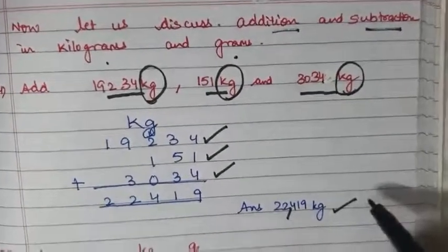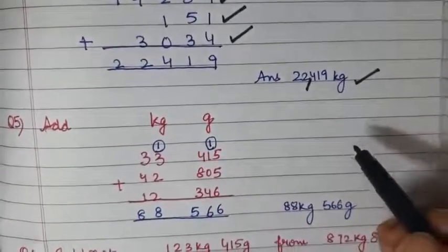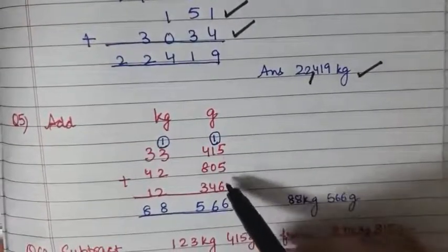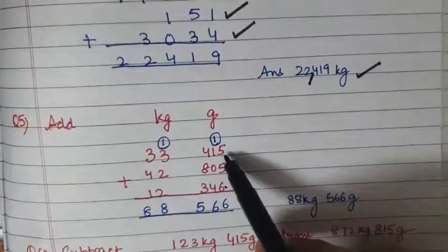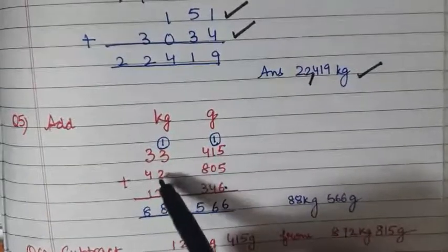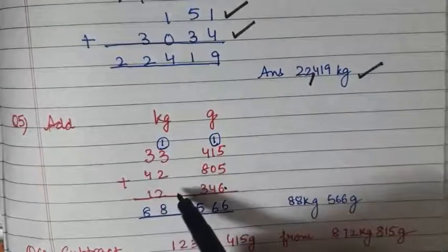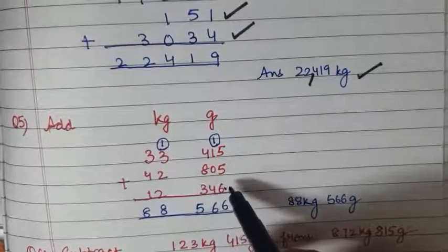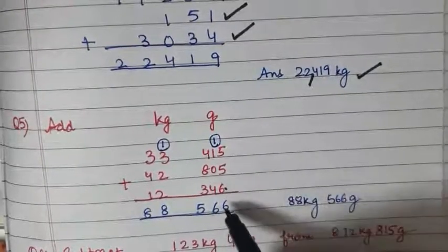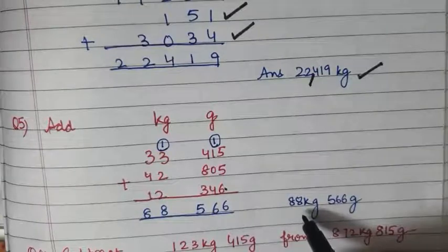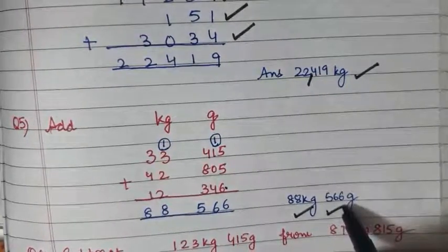In the next question, we have to add these 3 numbers: 33 kg 415 grams, 42 kg 805 grams, and 12 kg 346 grams. On adding these 3 numbers, we get finally 88 kg 516 grams.